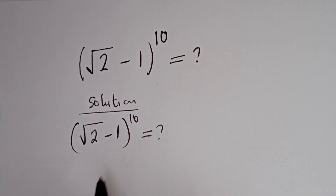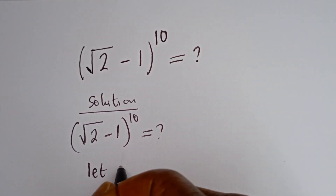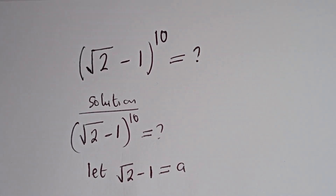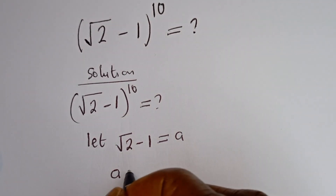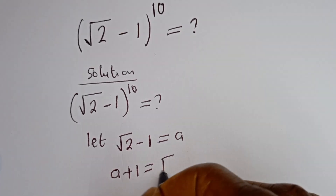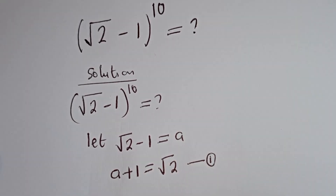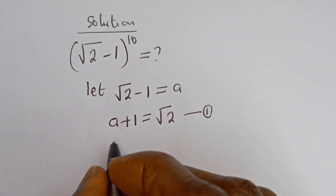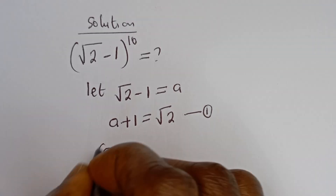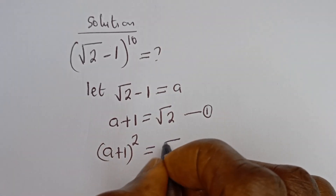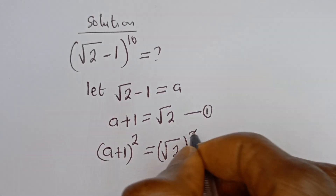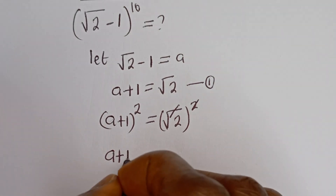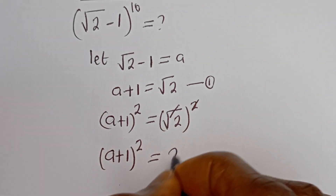Let square root of 2 minus 1 be equal to a. Then a plus 1 is equal to square root of 2 — let's call this equation 1. Now let's square both sides of equation 1: a plus 1 squared is equal to square root of 2 squared.